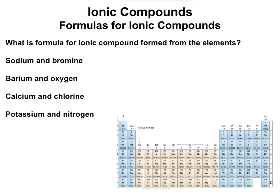First one: sodium and bromine. Sodium, symbol Na, is going to be plus one — it would have to lose one electron, so it has a positive one charge. Bromine is a halogen, just like fluorine, so it's going to be a minus one charge. Whenever they have the exact same charge, we don't need subscripts because it's a one-to-one ratio. So we write the compound as just NaBr.